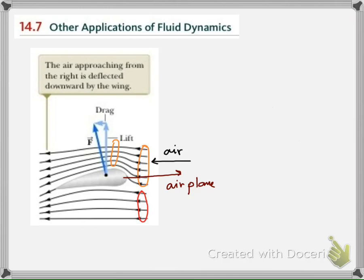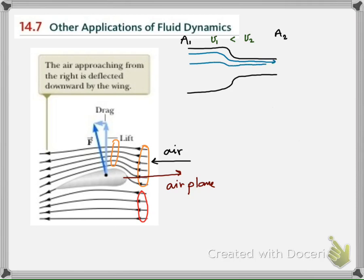We can understand this by looking back at the continuity equation. Once the fluid moves from the area with larger cross-sectional area A1 to the area with smaller cross-sectional area A2, and if the velocity on the left side is V1 and on the right side is V2, we know that V2 is larger than V1. In terms of the line of flow, the lines of flow are forced to come closer.